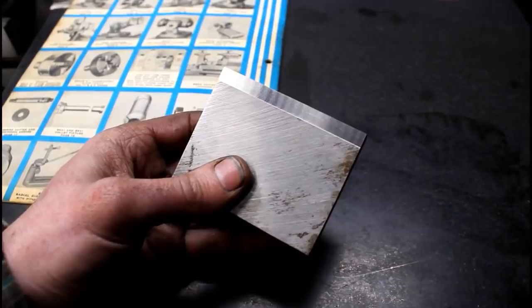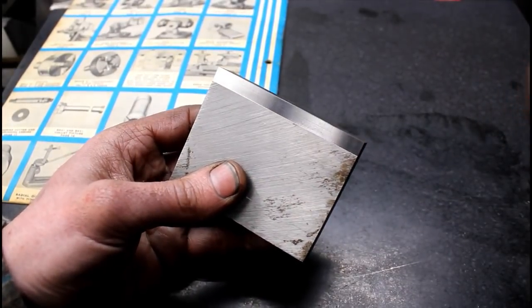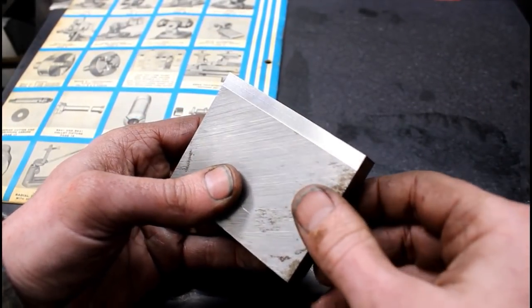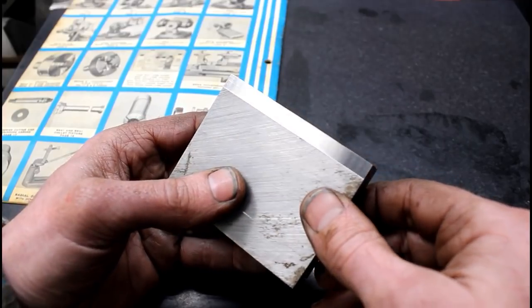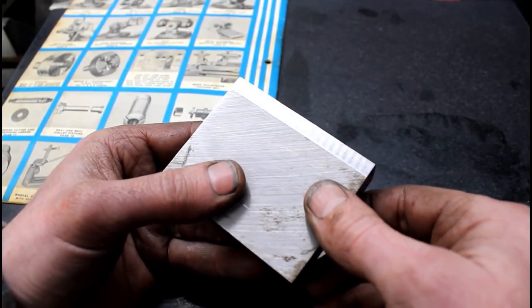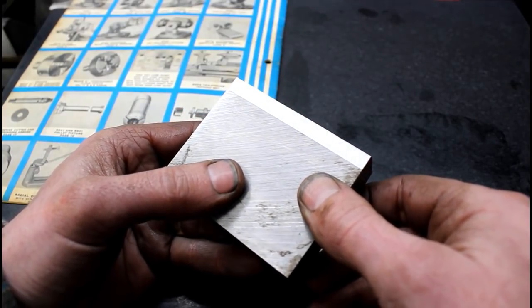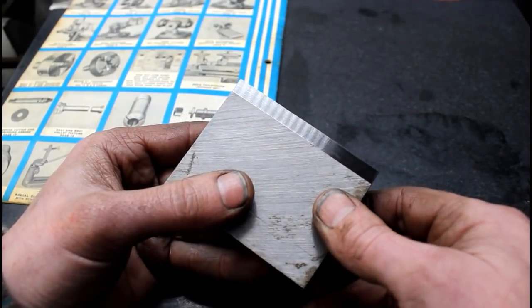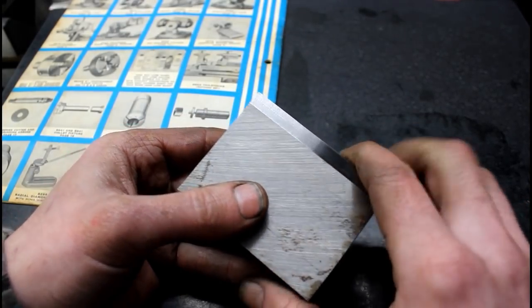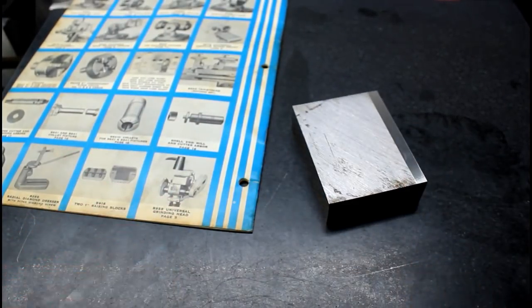Here's a little better look at that surface finish. Not too bad. See the LED lights in the reflection. Pretty happy with that. Let's go look at the arbor that we need to build.